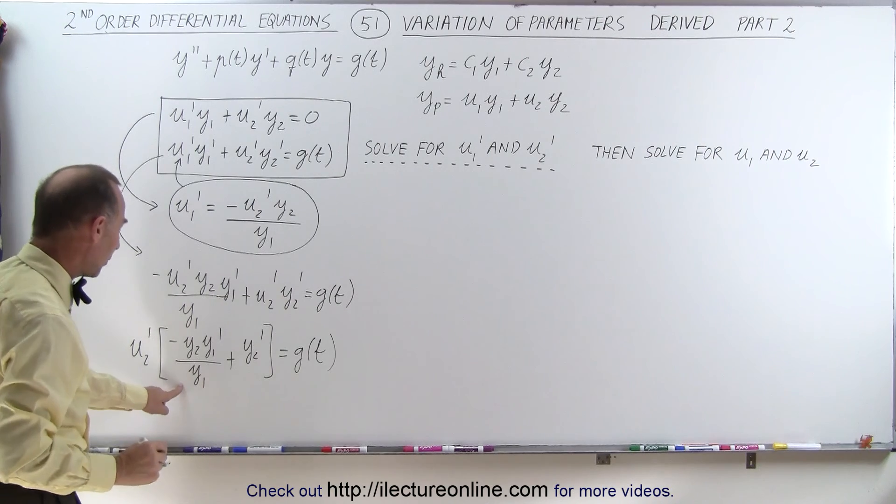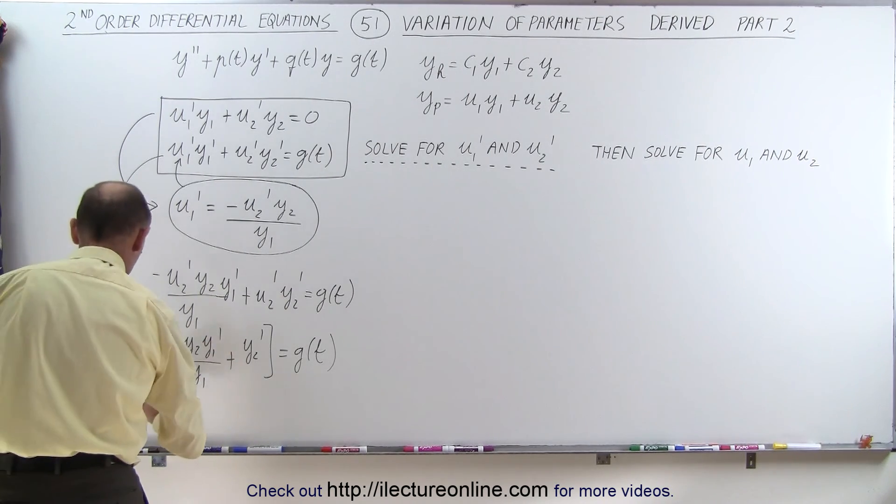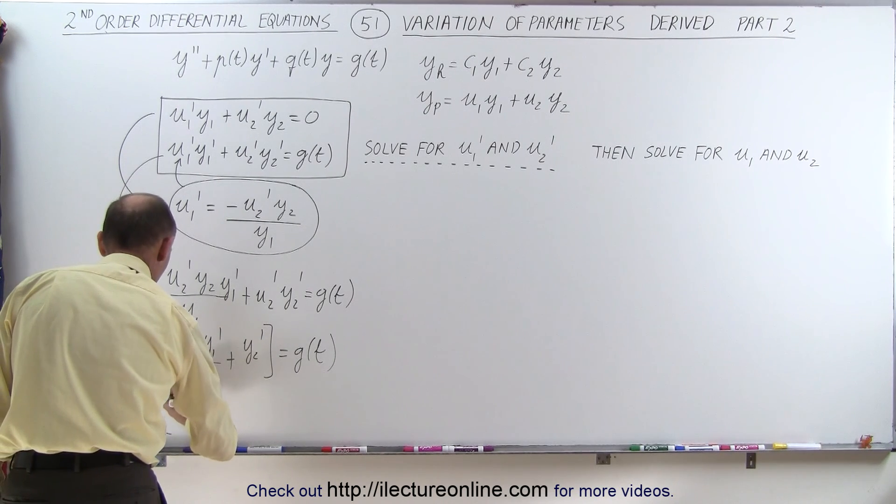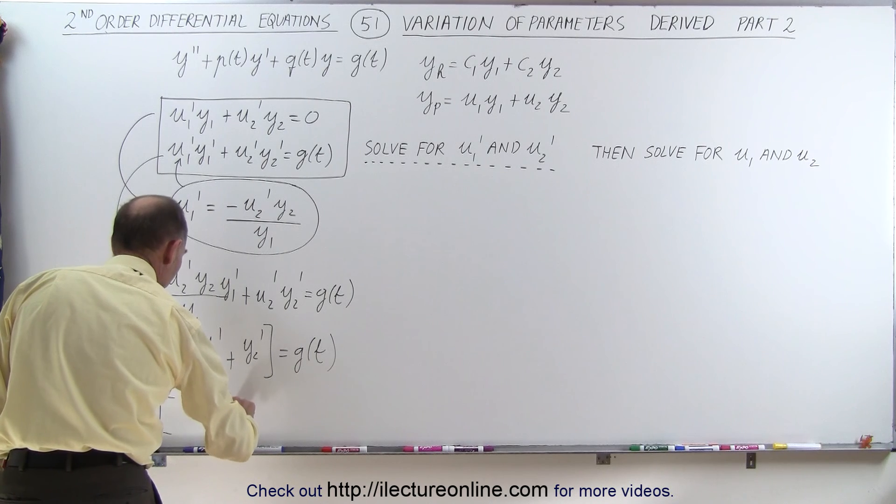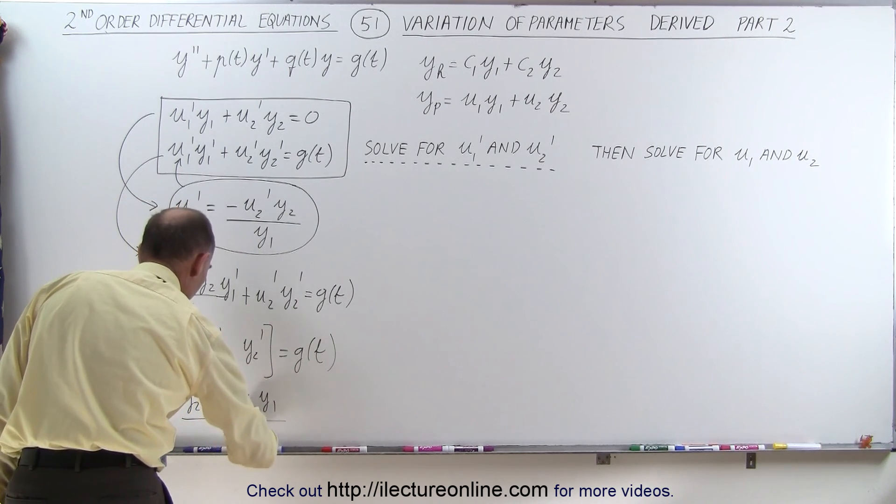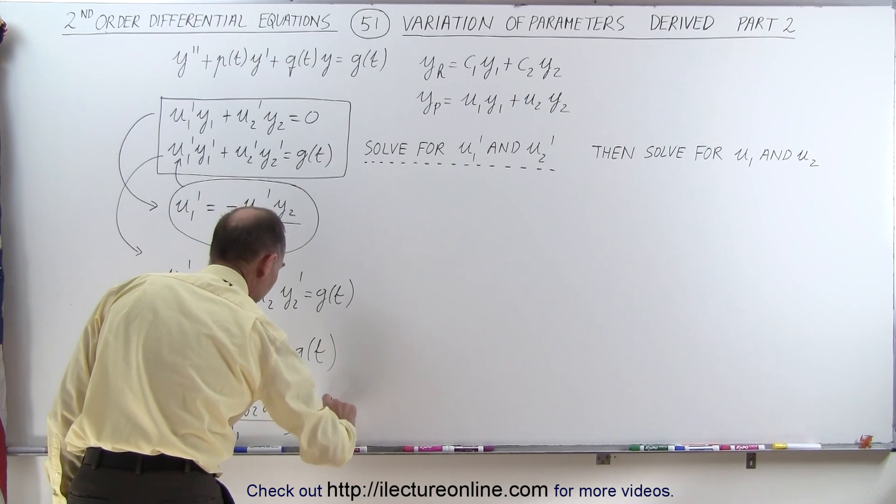You can see here that we can put all this over common denominator, and if we do, we get the following. We get u2' times this becomes minus y2 y1' plus y2' y1, all over y1', and that equals g of t.